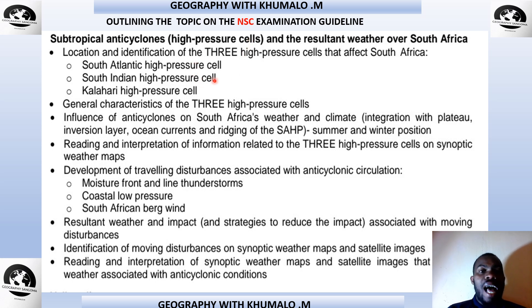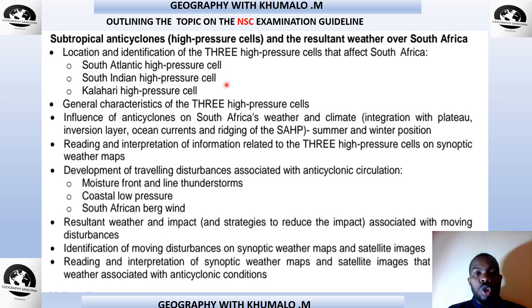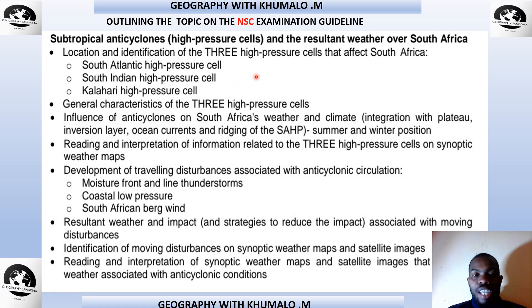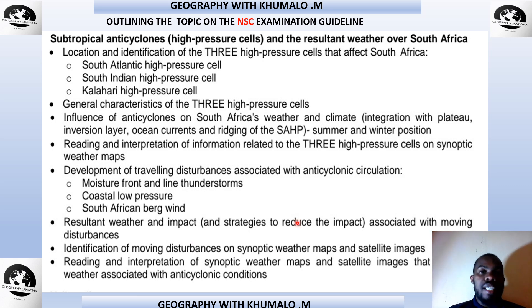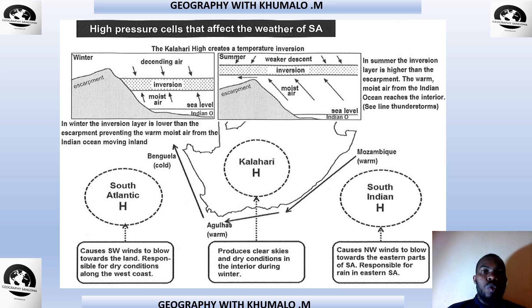When we talk about our high pressure cells — the subtropical anti-cyclones — we talk of the South Atlantic High Pressure Cell, which is known as the Saint Helena. We talk about the South Indian, which is also known as the Mauritius High. We also talk about the Kalahari High Pressure Cell, which is also known as the continental high. We look at the general characteristics and traveling disturbances. Let's look at the location of these three high pressure systems, Grade 12.